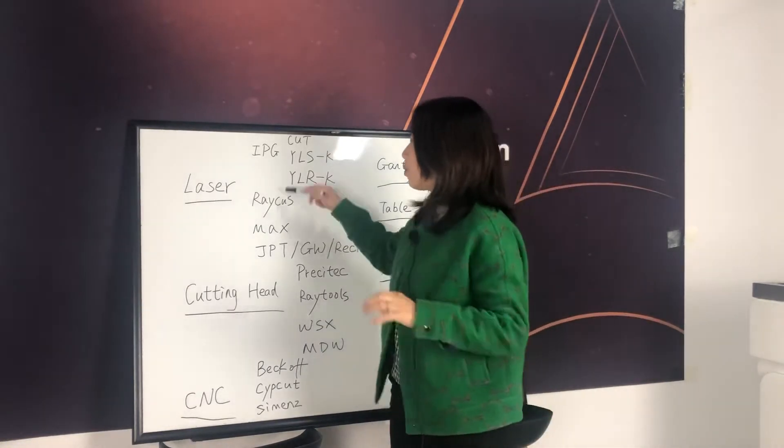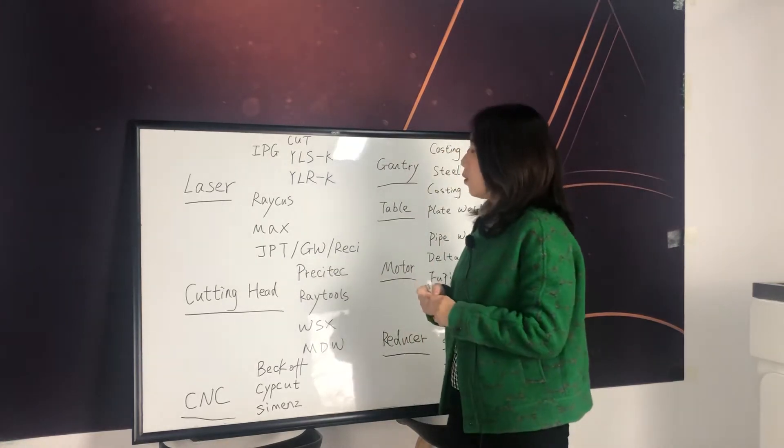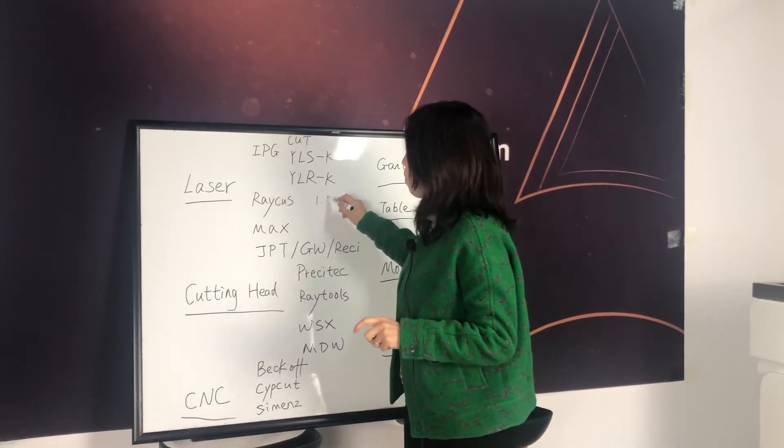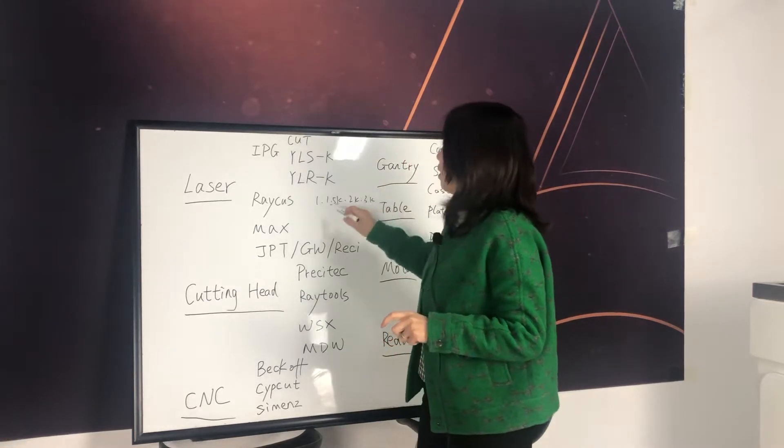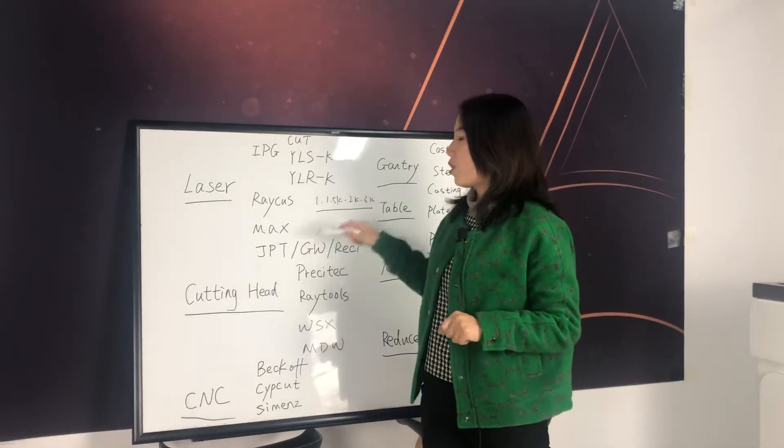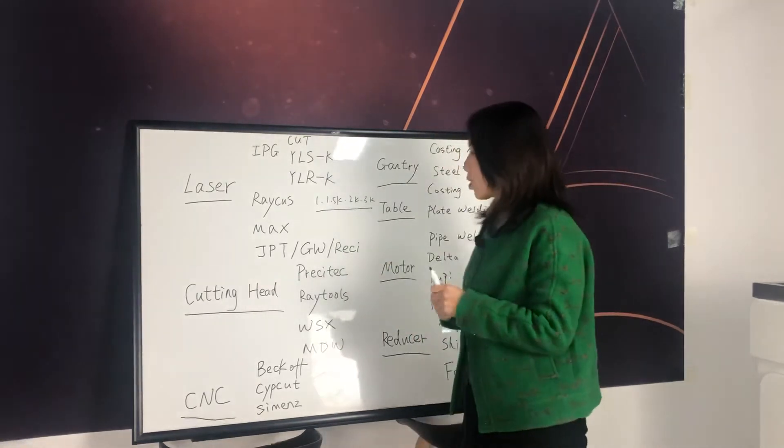So for laser, we have IPG, Raycus, Maxx and many small brands here. We can name the price of $1K or $1.5K or $2K or $3K. When we decide the price of the machine, we just plus the laser price. We come to the price of our laser cutting machine.